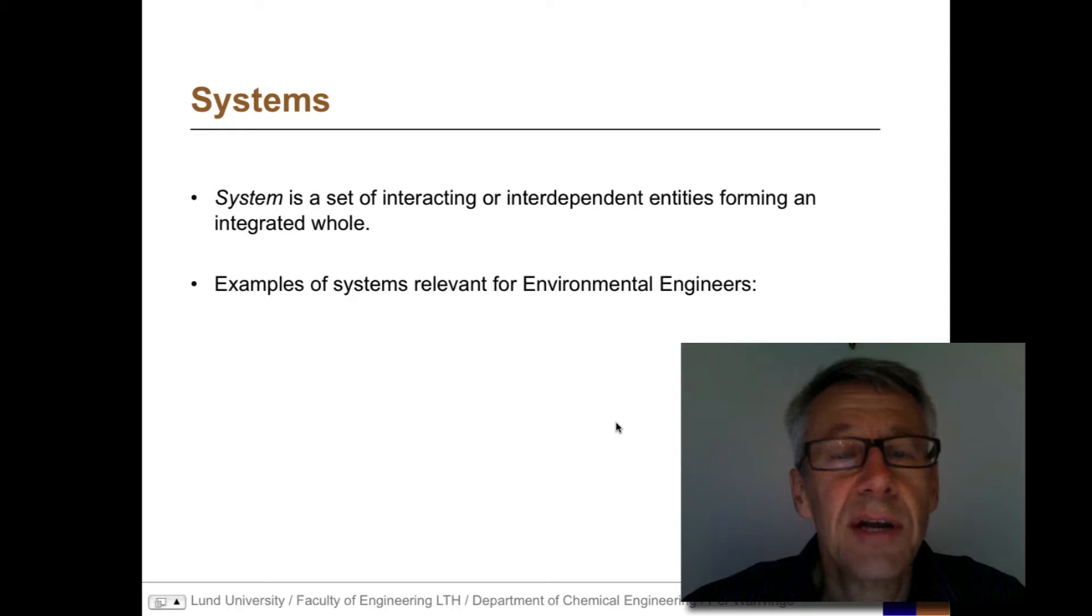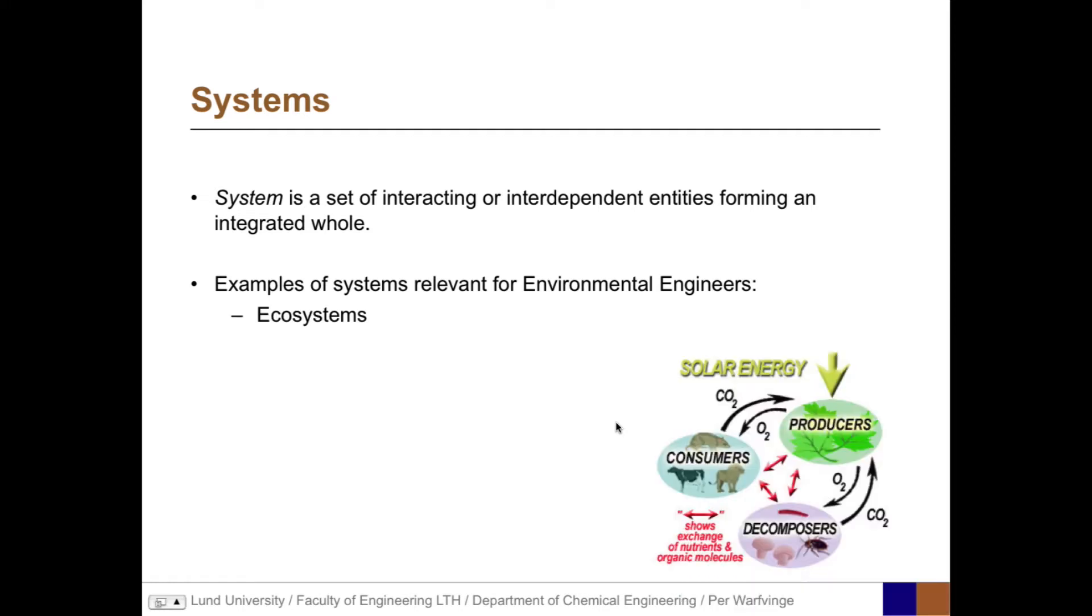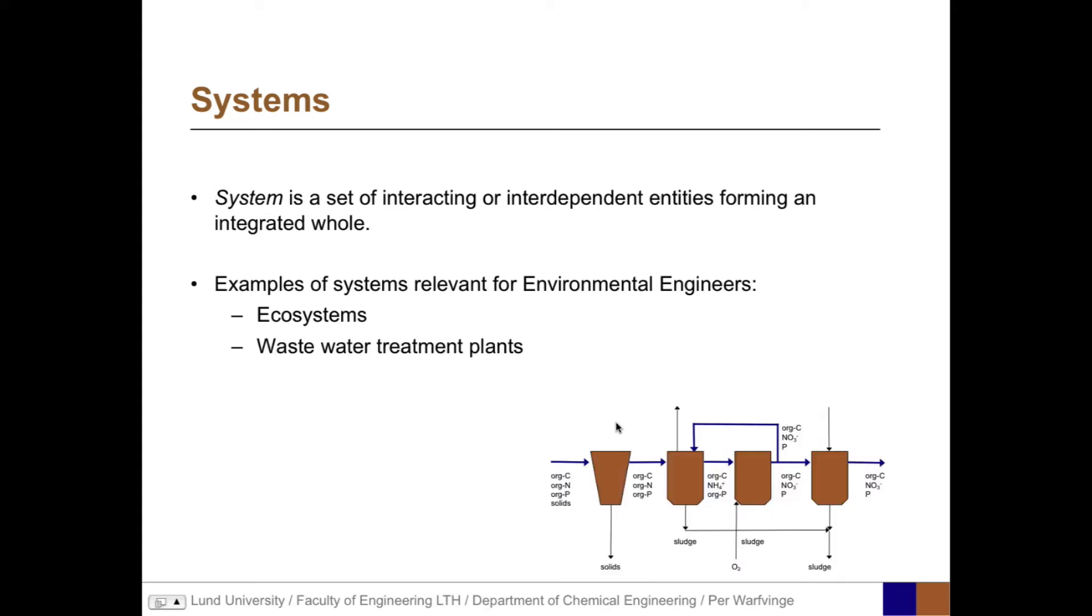In environmental engineering, what kind of systems are of primary interest? One example is ecosystems, a natural system with very many interacting parts. We have wastewater treatment plants, which are engineered systems with various compartments like basins or reactors where chemical reactions take place. And they're definitely connected and very interdependent.